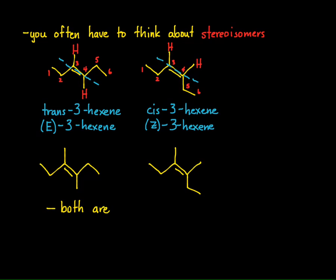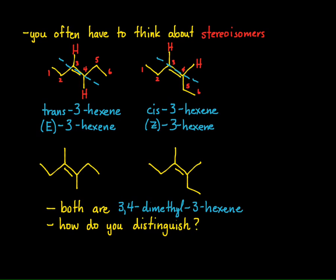if I name both of these, notice they're both 3,4-dimethyl-3-hexene because still the longest continuous chain is six carbons long. So how do you distinguish between these two things when you don't have hydrogens, two hydrogens coming off? Well, we're going to see that you have rules, more rules.